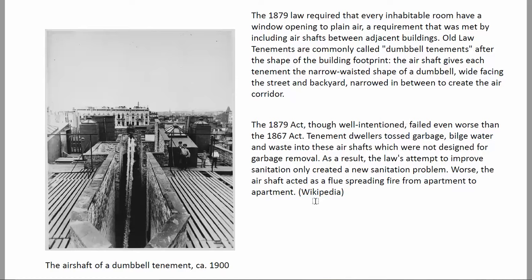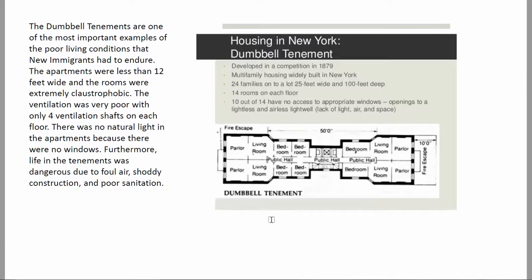In 1879 — this is information pulled from Wikipedia — a law was passed requiring every tenement to have windows so fresh air could come through. Without windows, the air in these rooms would grow stale and dangerous; the buildup of carbon dioxide would be quite hazardous. They called the resulting design 'dumbbell tenements' because they were shaped like a dumbbell — those hand weights. This indented section was the only place where there would have been windows.